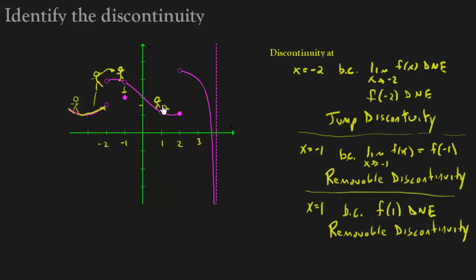Alright, so now our stick figure is moving and it gets to this point. Notice that there's actually a y value here, right? That's a y value. So that exists. But the limit coming in from the left doesn't equal the limit coming in from the right. So we're going to have another discontinuity.